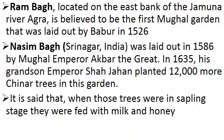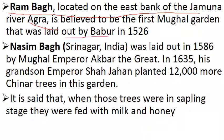We will discuss one by one. First, Ram Bagh Garden — located on the river bank of the Yamuna river in Agra. It was built by Babur in 1526.